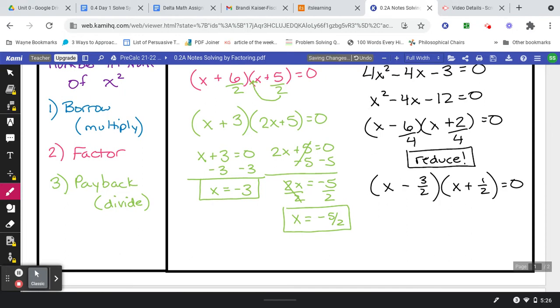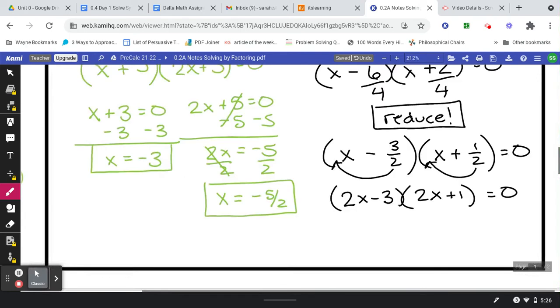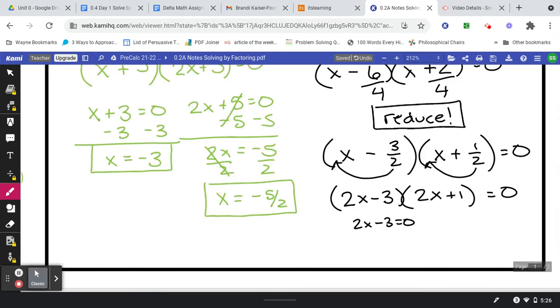Then you can bring the twos in front, and at the end you would set each of those equal to zero and solve. Again, at any point pause the video, give it a try, and then play again. Make sure that you've got it correct. Here you should get three over two, and over here you should get negative one-half.